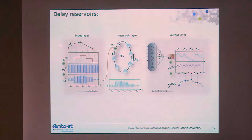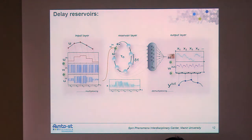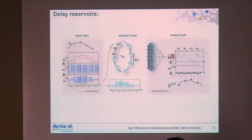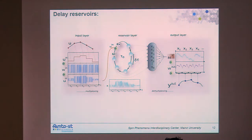To translate the delay system into a computer, the scalar input sequence is discretized over one delay interval and multiplied by a temporal mask — a random binary sequence repeated every delay interval. Multiplying this mask by the input value creates the modulated input signal, which is serially injected into the system. The system's internal dynamics generate the reservoir response. For the output, the response is demultiplexed: chopped into sequences of length tau, the temporal positions of individual nodes are identified, multiplied by readout weights, and summed to produce the output signal.